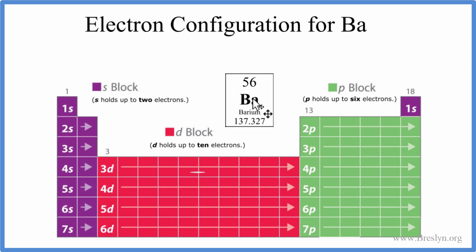So it's a neutral element, so protons will equal electrons. We have 56 protons, that means we have 56 electrons for the barium electron configuration.